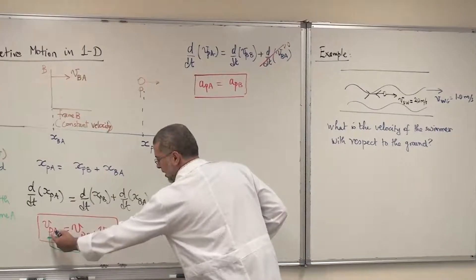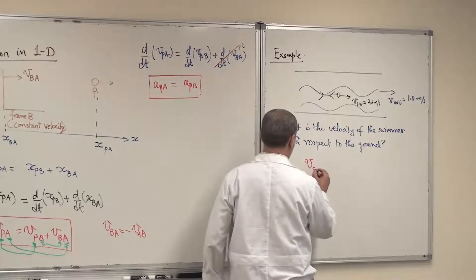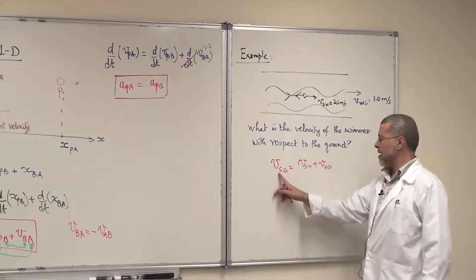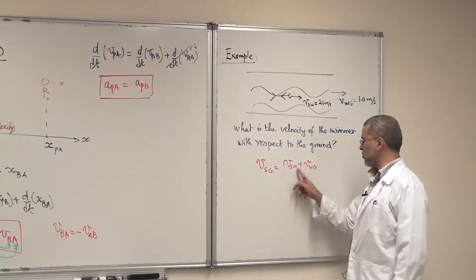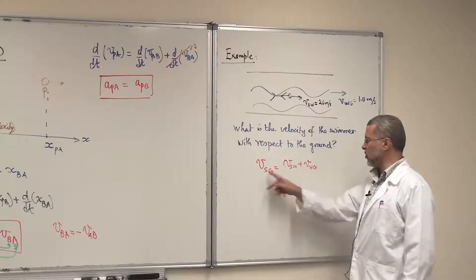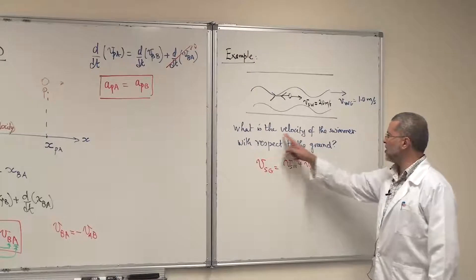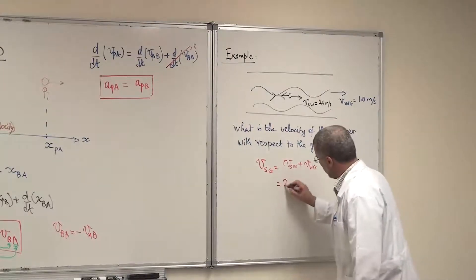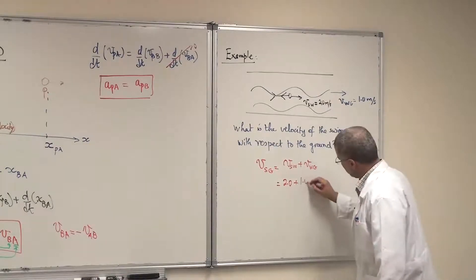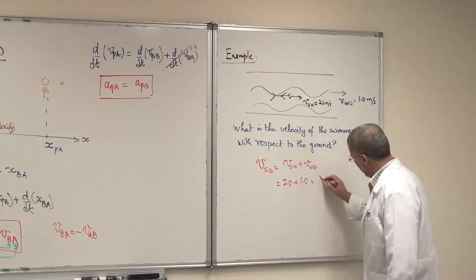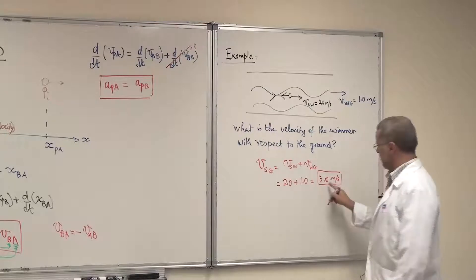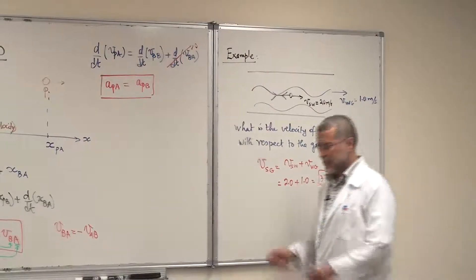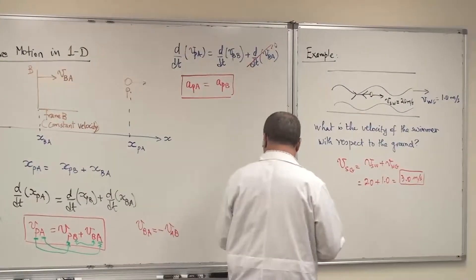The velocity of the swimmer with respect to the ground equals velocity of the swimmer with respect to the water, plus velocity of the water with respect to the ground. S is here, G is here, and the moving frame — the water — is in between. I'm looking for the velocity of the swimmer with respect to the ground. This value is 2.0 plus 1.0. Both are in the same direction so I add them: I get three meters per second.